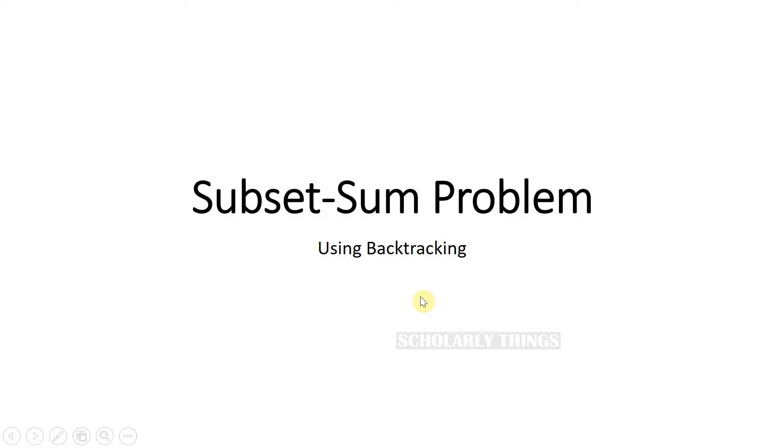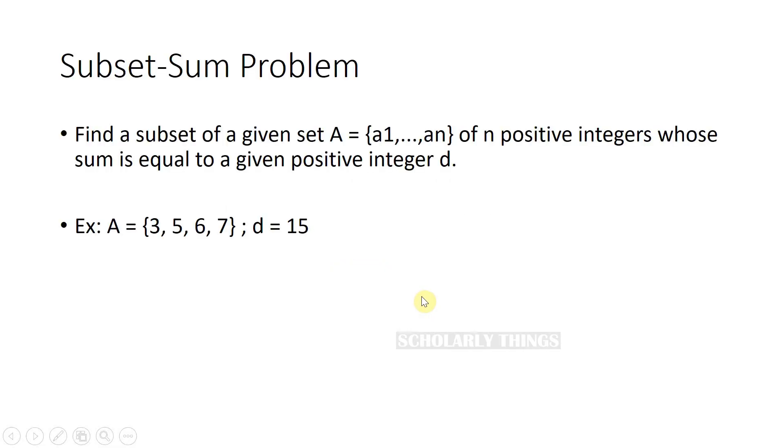Subset sum problem using backtracking. The problem definition goes like this: find a subset of a given set A containing a1 to an of n positive integers whose sum is equal to a given positive integer d.